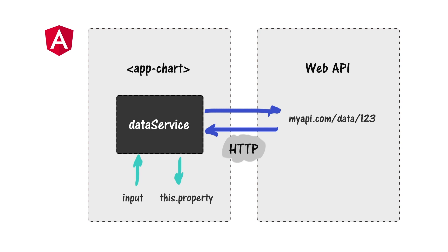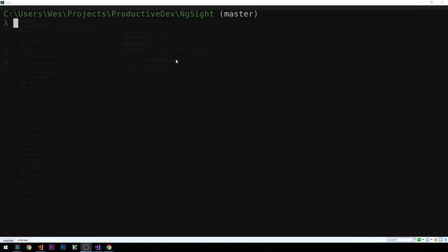Everything you see here, with the exception of the HTTP module, we'll be implementing from scratch. We'll be building out an app chart component and a number of different services that communicate with the web API, which we'll also be building. We're going to make use of a lot of the great tools that Angular provides for us to set up this type of architecture. With that said, let's head to our terminal and create our first component.